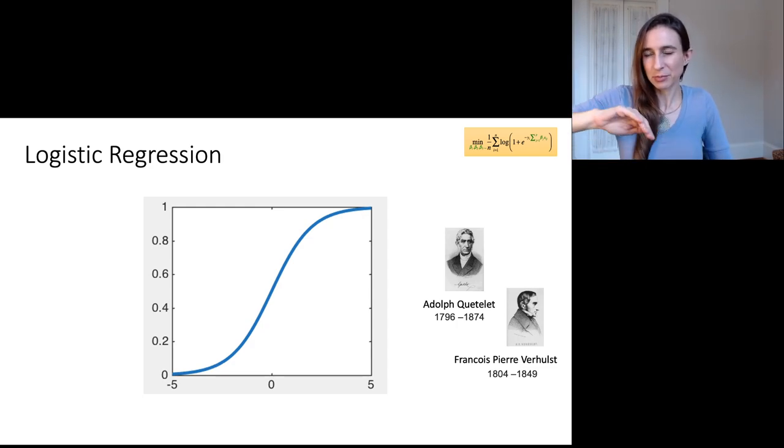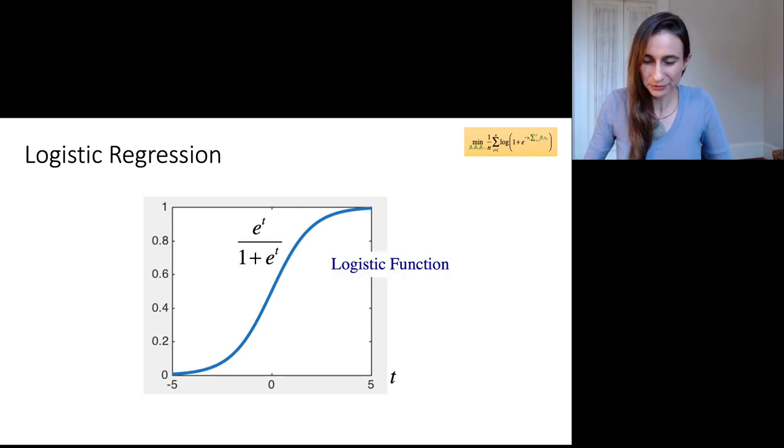Okay, so they were looking at the proportion of the population, the proportion of the country's total number of people, right? And so that value would saturate as you get more people. Okay, so I'm just going to put the formula over here for that function that they invented, and you can see what it does.